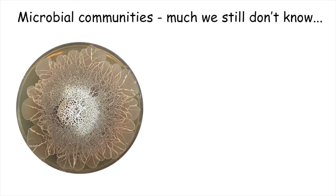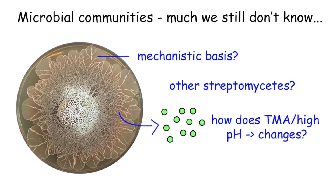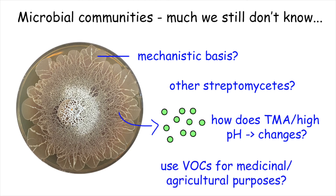Microbial communities are highly dynamic, and there is obviously so much that we don't yet understand about what happens in their natural environments. In the case of Streptomyces, we are most excited about determining the mechanistic basis for exploration, establishing the extent to which different Streptomyces are capable of exploring, understanding how TMA and high pH stimulate morphological changes in both bacteria and fungi, and revealing the volatile potential of these organisms and determining unique ways of exploiting these molecules for medical and agricultural purposes.